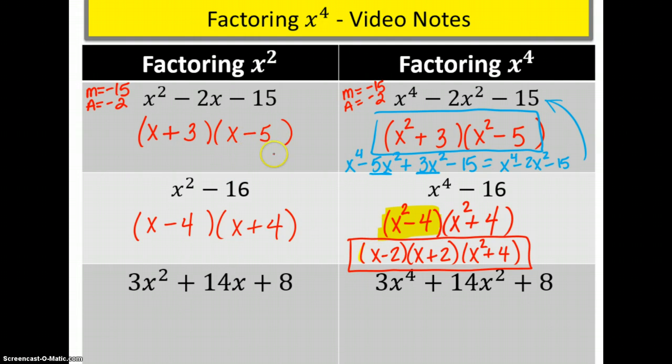So anytime you factor x to the fourths and you have x squareds here, always look to see if it is dots. See if it is a difference of two squares. This is not because it's not a difference and three is not a perfect square. This is not because five is not a perfect square. But this one here is.